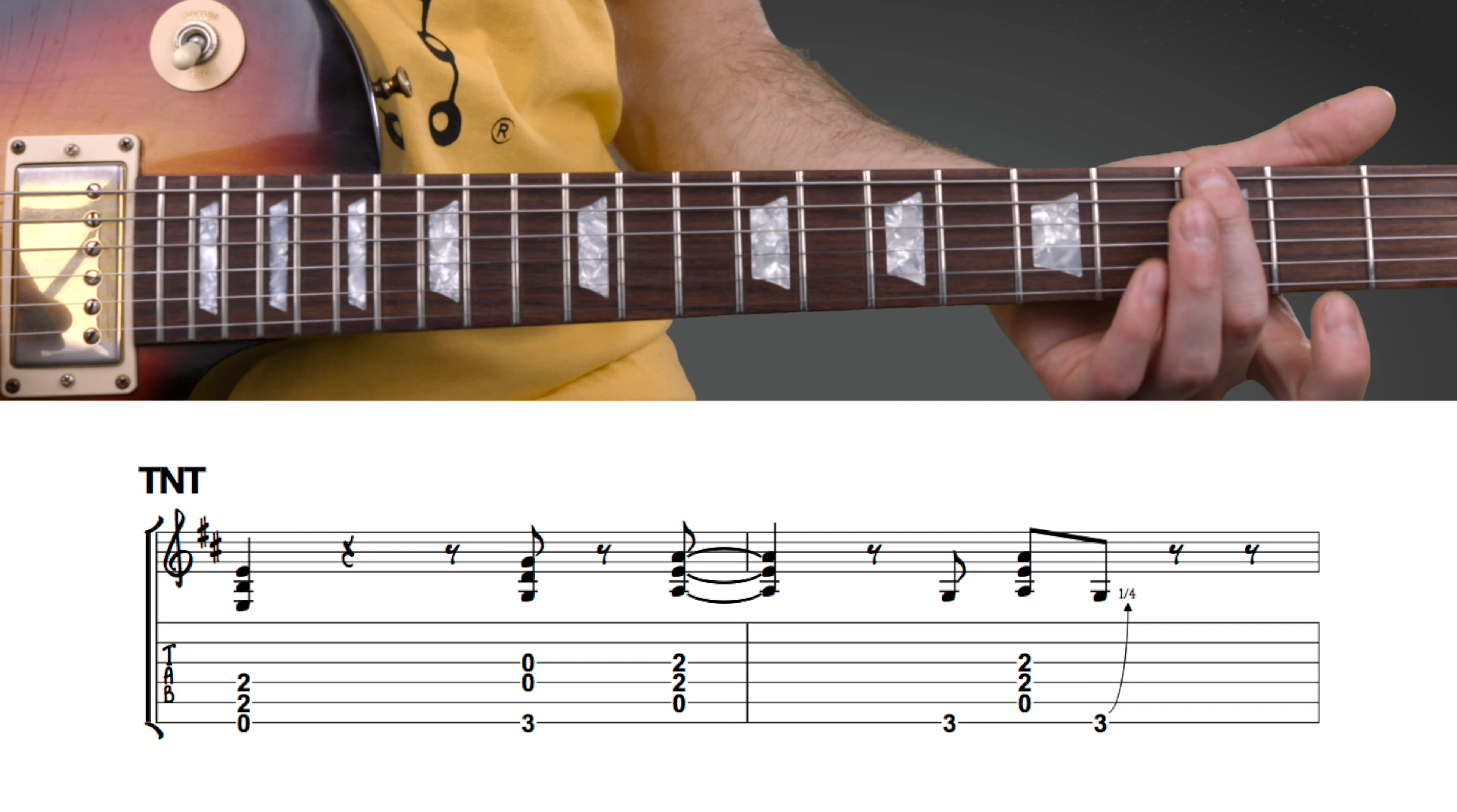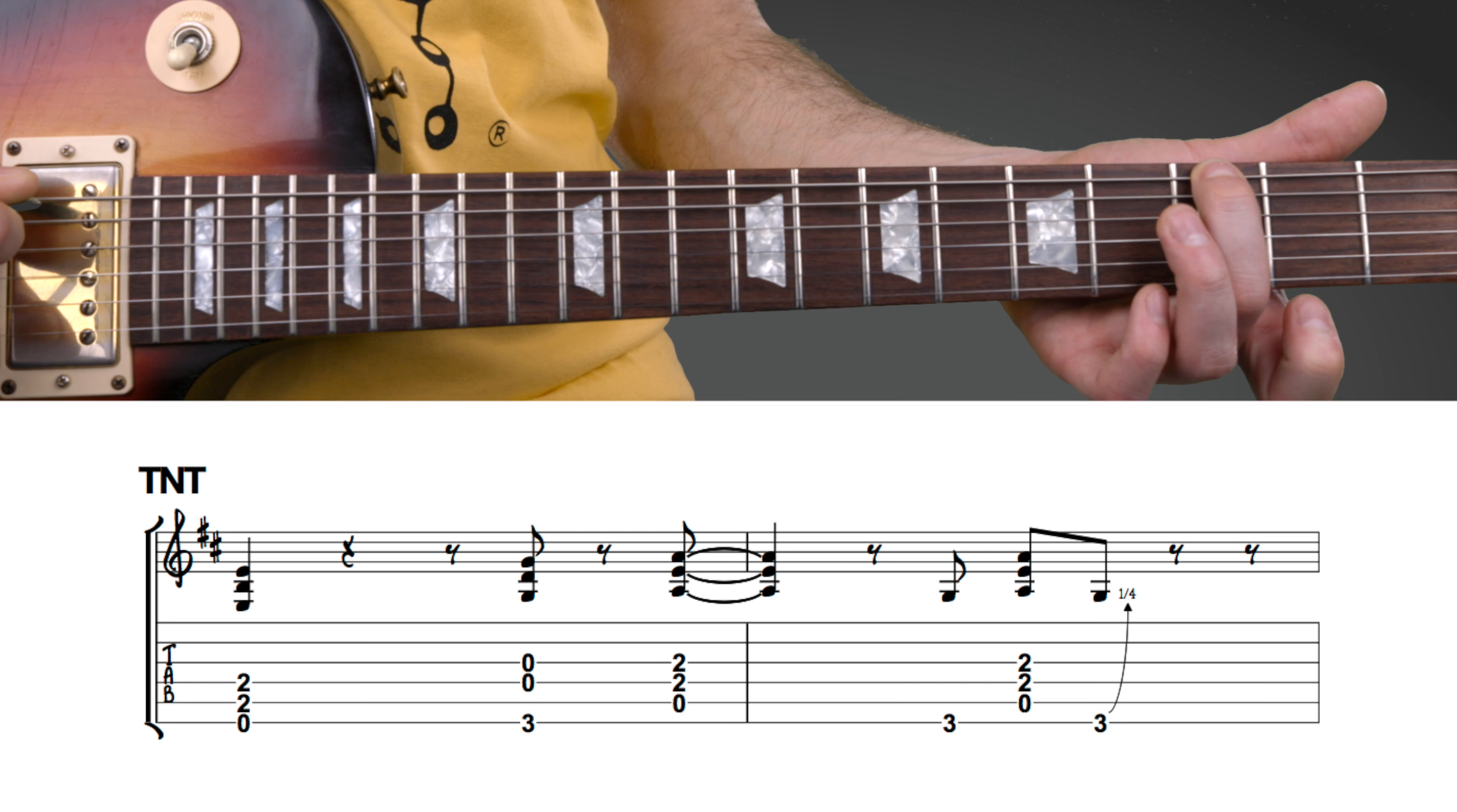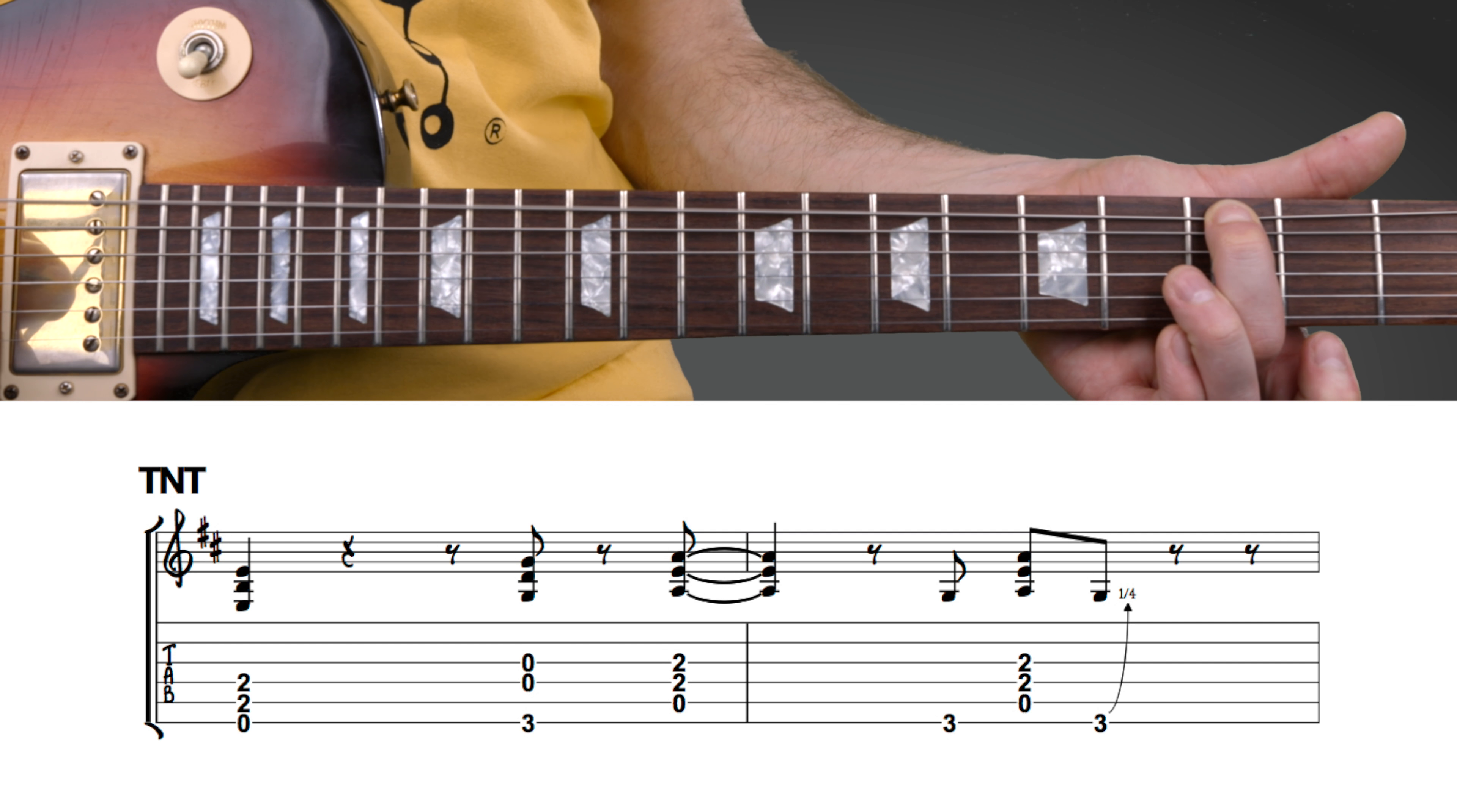And back to the third fret on the top string with a slight quarter bend, which is where you sort of pull the string down.